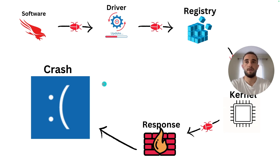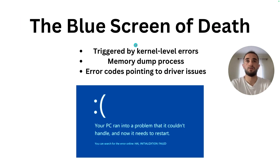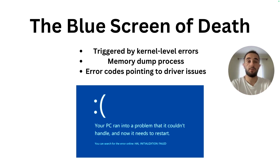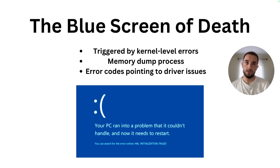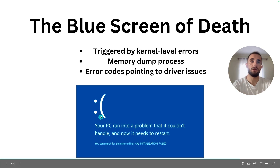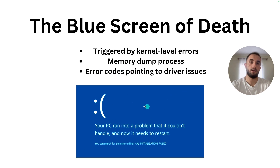The system shuts down everything to avoid losing data — this is the self-protective mechanism Windows computers have. The Blue Screen of Death is triggered by kernel-level errors. There is also the memory dump process: when an error occurs, the memory tries to capture a dump file of the error state and save it for later analysis to understand what the error was and how to fix it. But if the memory is overloaded or stressed, it sometimes just crashes everything and shows the Blue Screen of Death.